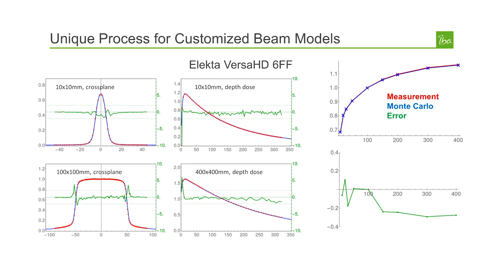The example shown here is an Elekta Versa HD accelerator with a 6 MV flattened beam. On the right side we see the output factor curve with an error on the order of 0.2%, which is very close to the output factor stability of the accelerator and also very close to the statistical uncertainty in the Monte Carlo dose computations. In the center column we see depth dose curves for a small 10×10 mm field and a maximum 400×400 mm field, with errors well below 1%. The left column shows cross profiles for very small and very large fields with very high accuracy.